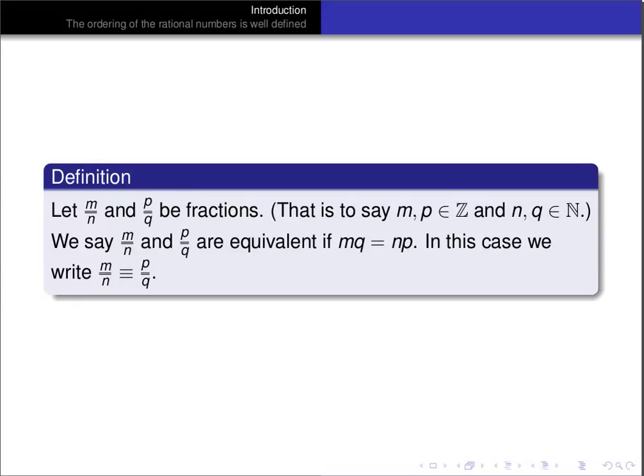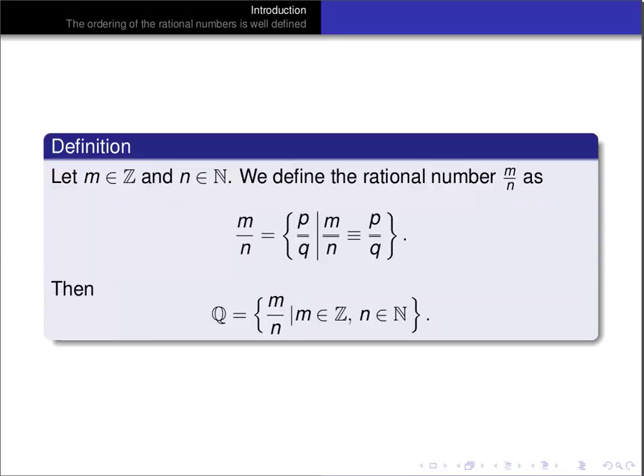We're distinguishing the fractions from the rational numbers by writing them with double bars, and we say that those fractions are equivalent and write m over n is equivalent to p over q with that triple equal sign. The reason we distinguish fractions from rational numbers is we want to define rational numbers as sets of equivalent fractions. So the rational number m over n is going to be the collection of all fractions p over q that are equivalent to the fraction m over n, as previously defined.